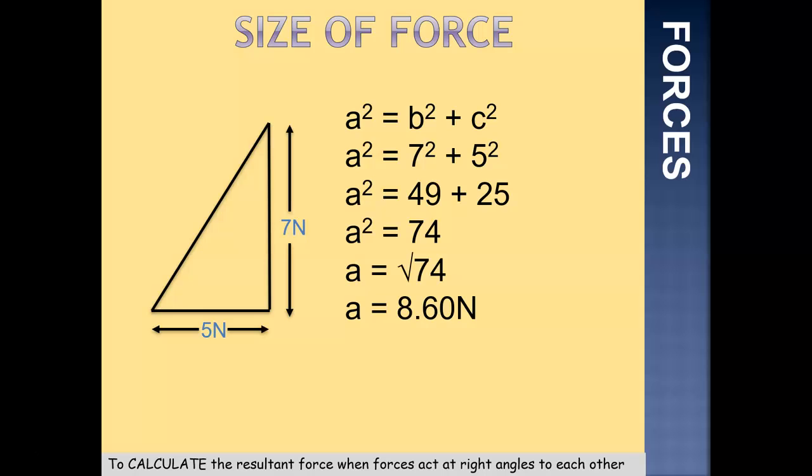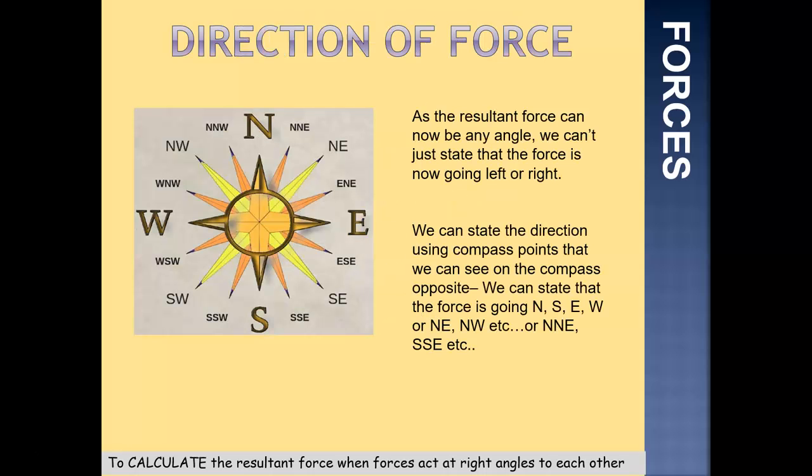So we've worked out the size of our force — 8.6 newtons. The direction can now be any angle. We can't just state the force is going left or right because our force could be acting to the north and to the east, to the west and to the south. So we state this direction using compass points. We can say the force is going north, south, east, west, or northeast, northwest, southeast, southwest — any of the direction points on the compass. That gives us our full answer because as it's a vector quantity, we have to give a size and we have to give a direction.